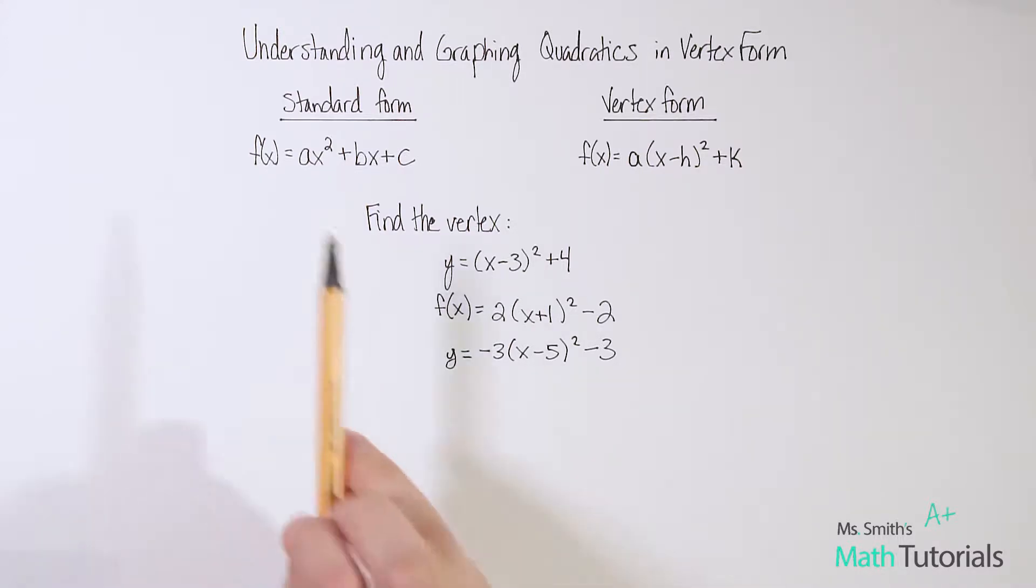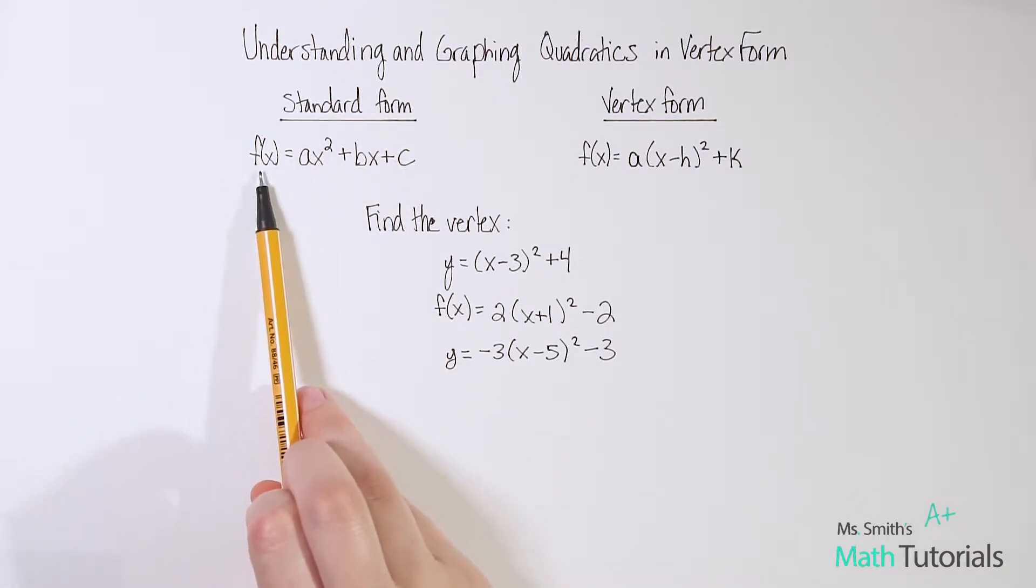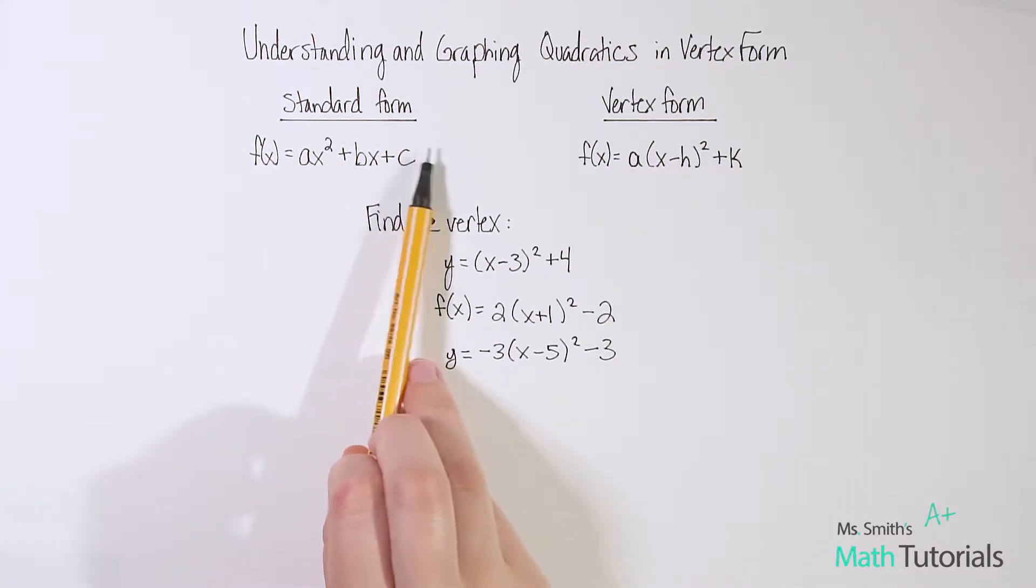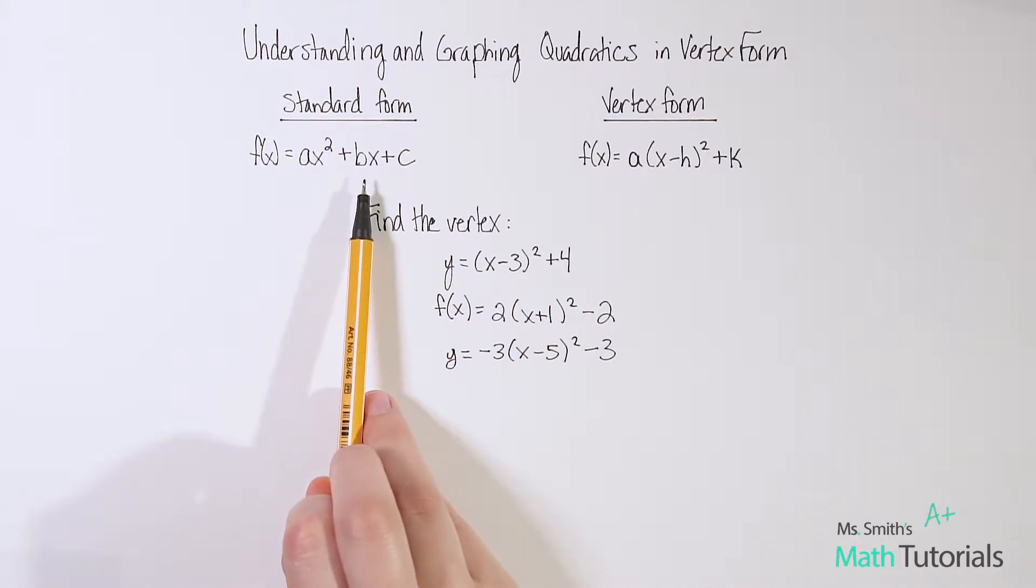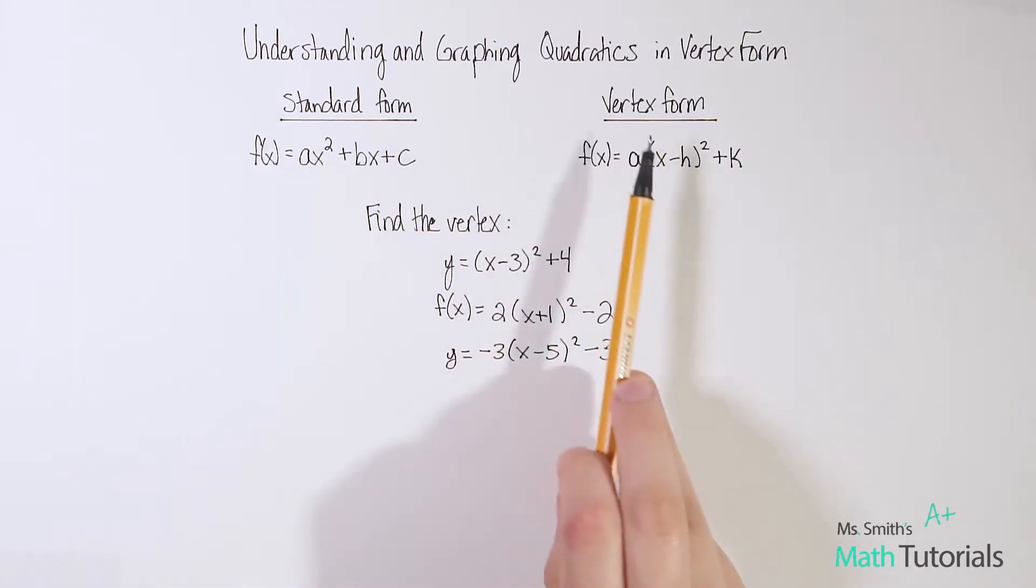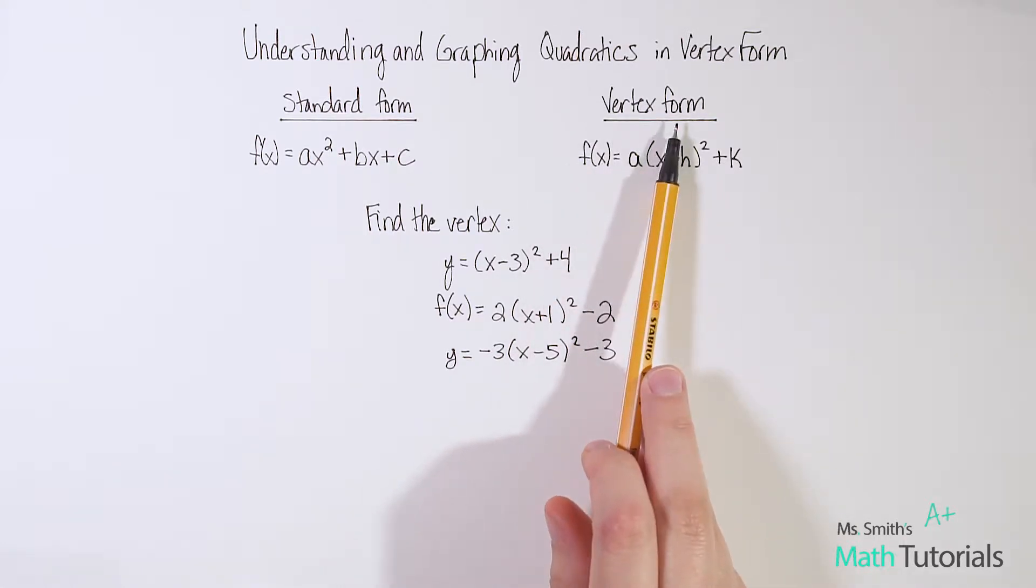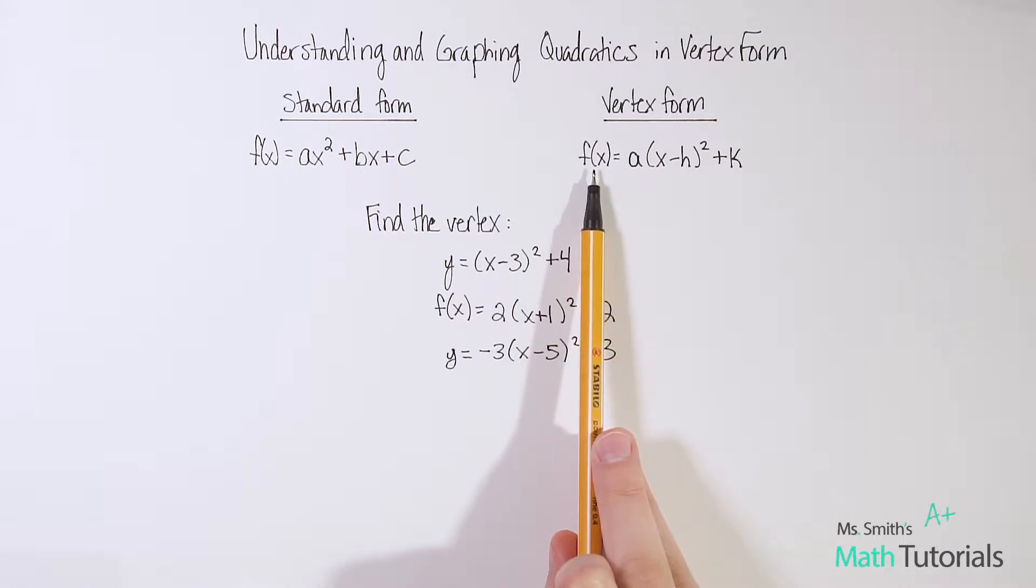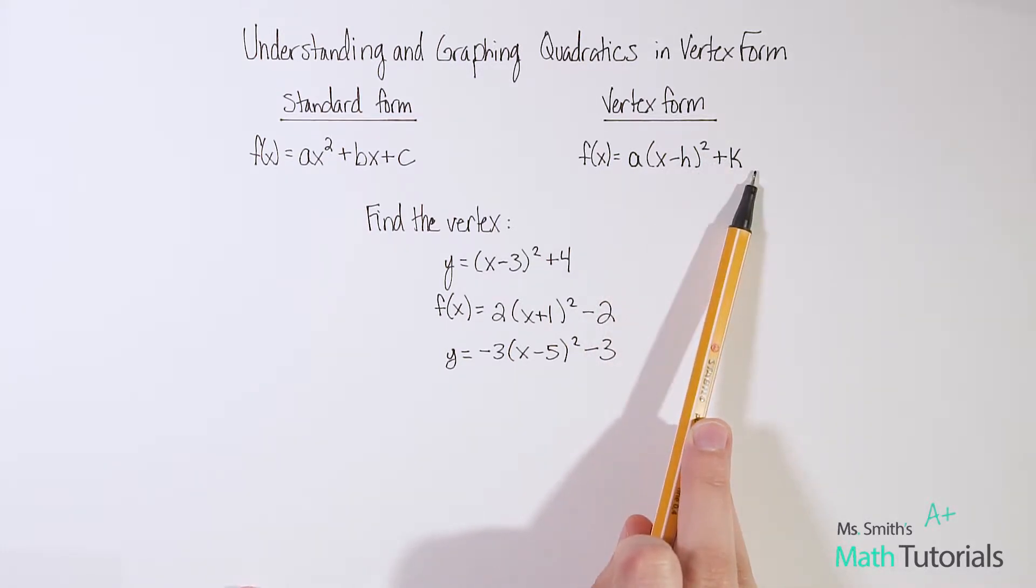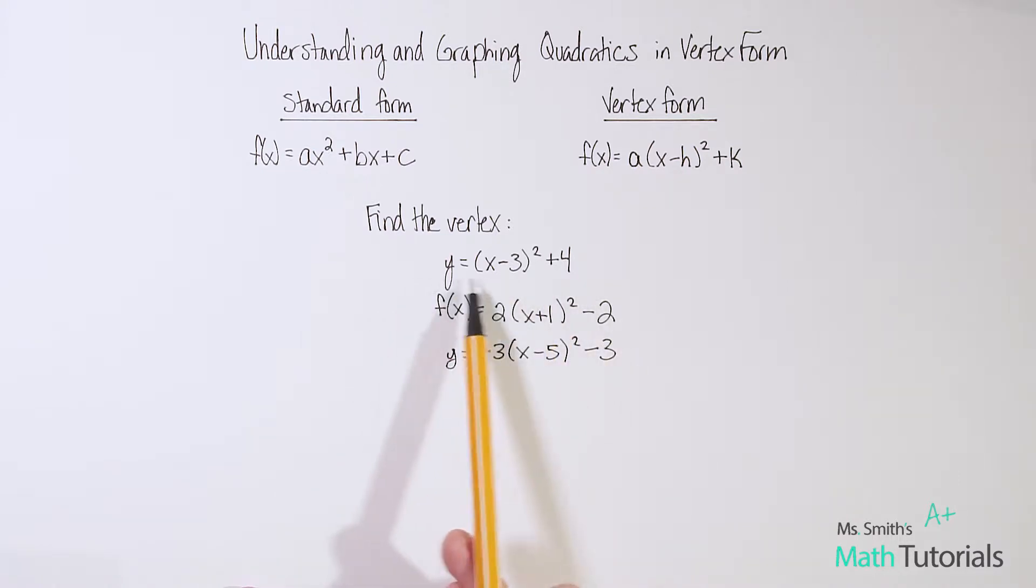I'm also going to be doing transformations of quadratics when in vertex form in a separate video. So you won't find those in this one. In this one we're purely talking about finding the vertex. Let's talk about quadratics. We're used to seeing quadratics in standard form like this: f(x) or y equals ax² plus bx plus c. That is standard form. That's how we're used to seeing something when we're ready to factor it. Vertex form is this same information just given in a different form. And it's called vertex form because it's really easy to see the vertex when it's in this form.